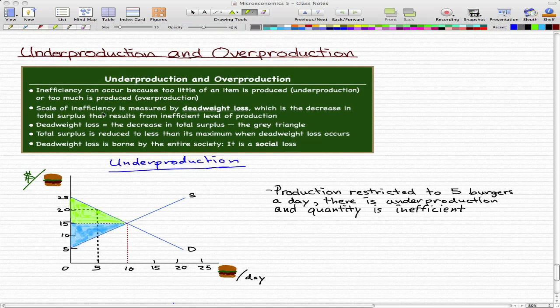The scale of inefficiency is measured by something we call deadweight loss, and deadweight loss is the decrease in total surplus that results from the inefficient level of production. Deadweight loss is the decrease in total surplus, and it is usually represented by a gray triangle, which we will draw in a short bit.